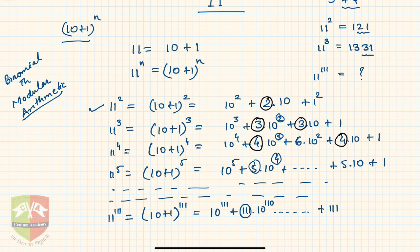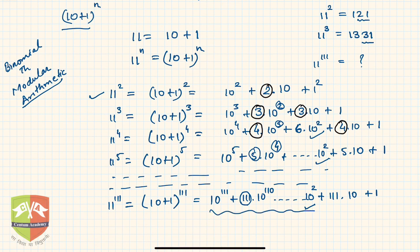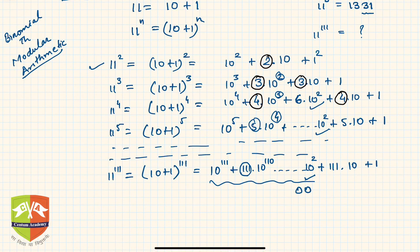So now last second last term will be 111 times 10 plus 1. And mind you, before this term there will be power of 10. All here, third last is power 2, so it will be power 2 here also. So hence if you add these terms, the last two digits is obviously 0 and 0, why? Because all these are higher powers of 10. Now that means the total 11 to the power 111, the last two digits will come from this sum, and this sum is nothing but 1, 1, 1, and 1.